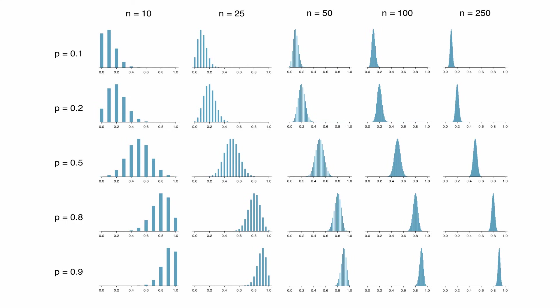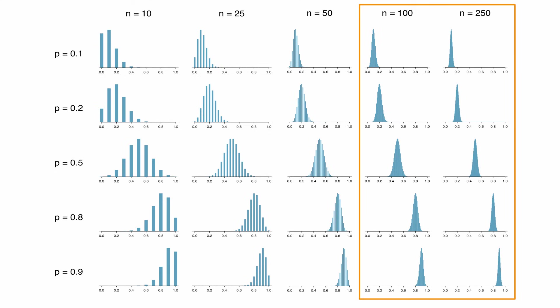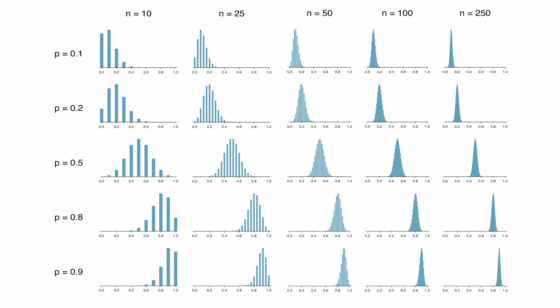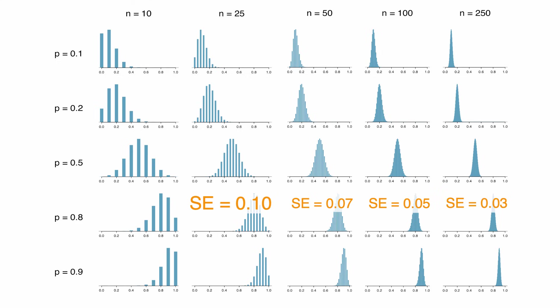When we jump to sample sizes of 100 or 250, all of the distributions are no longer skewed and are all reasonable for a normal approximation. The distributions are also getting tighter, meaning larger sample sizes produce point estimates more closely aligned with the truth. For example, with n = 25 and p = 0.5, the sampling distribution has quite a bit of variability compared to n = 50, 100, or 250. In general, the larger the sample size, the tighter the sampling distribution, and the more often our estimate is close to the true value.